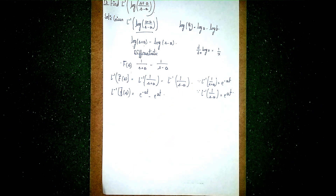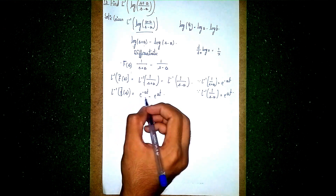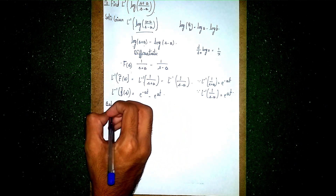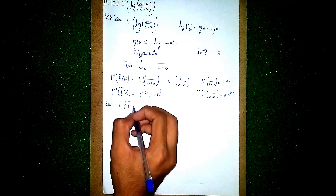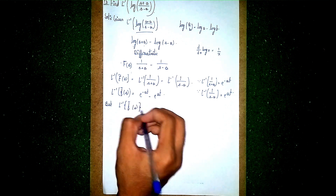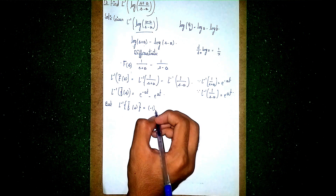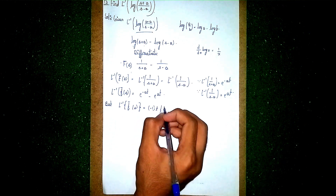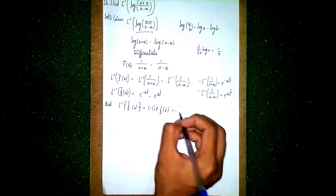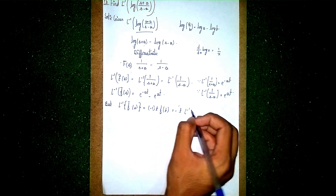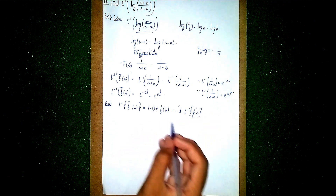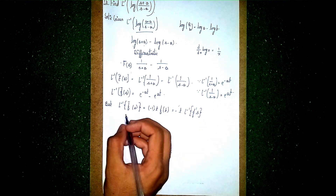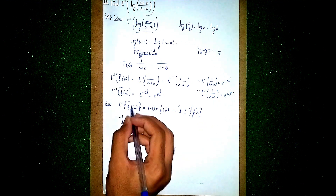Now we use the condition for inverse Laplace transformation. When F'(s) is given, we get: Laplace inverse of F'(s) equals minus t times Laplace inverse of F(s). So we multiply by minus one over t to the function.